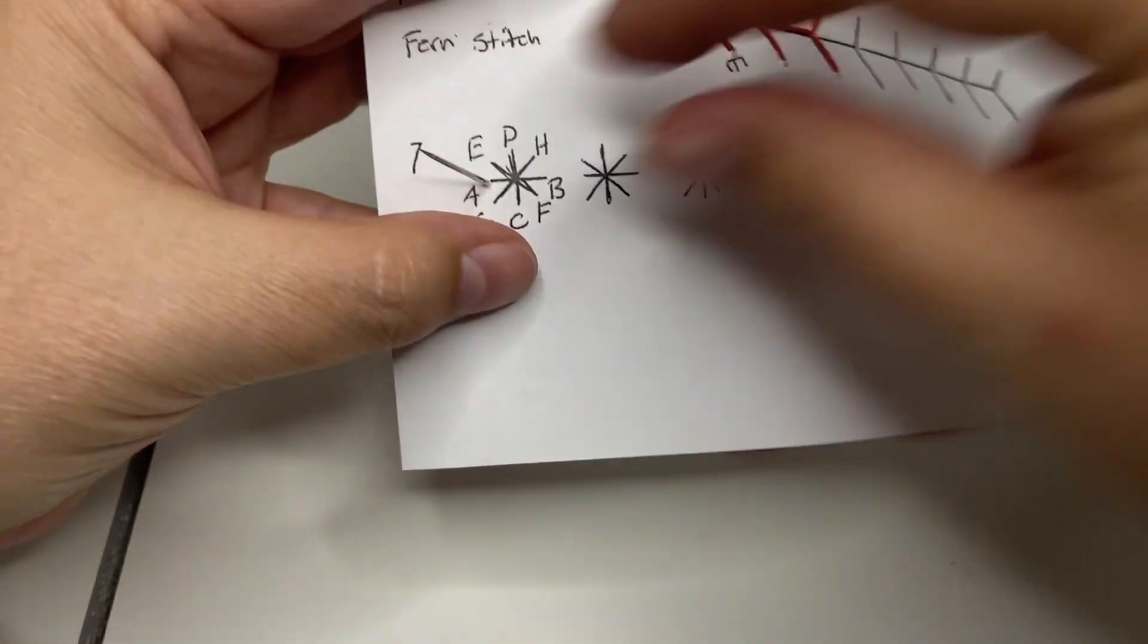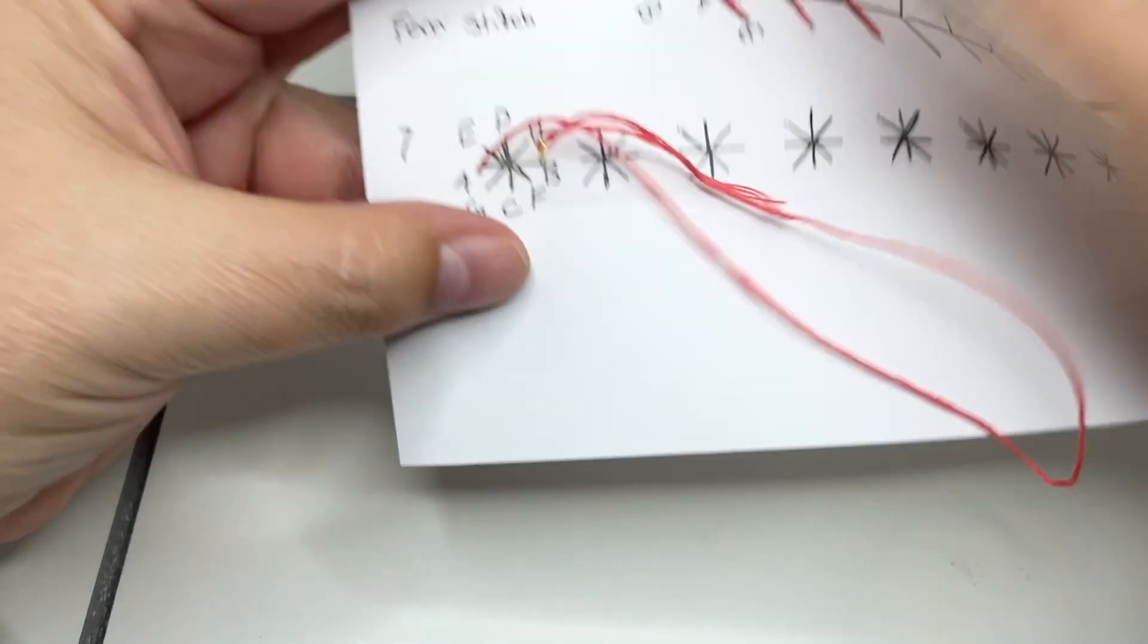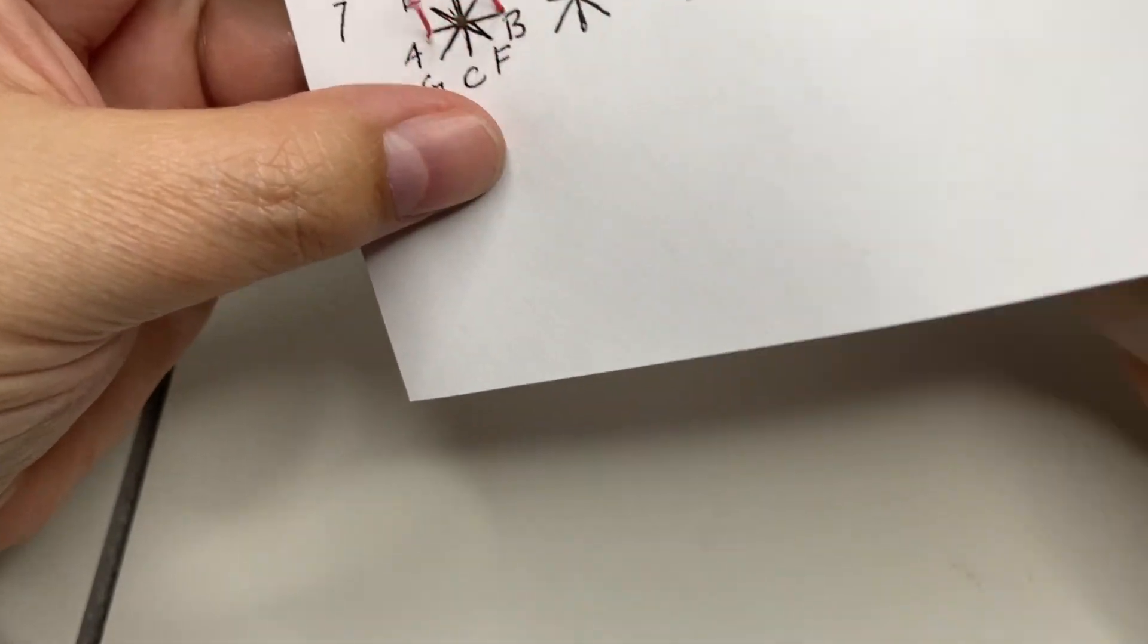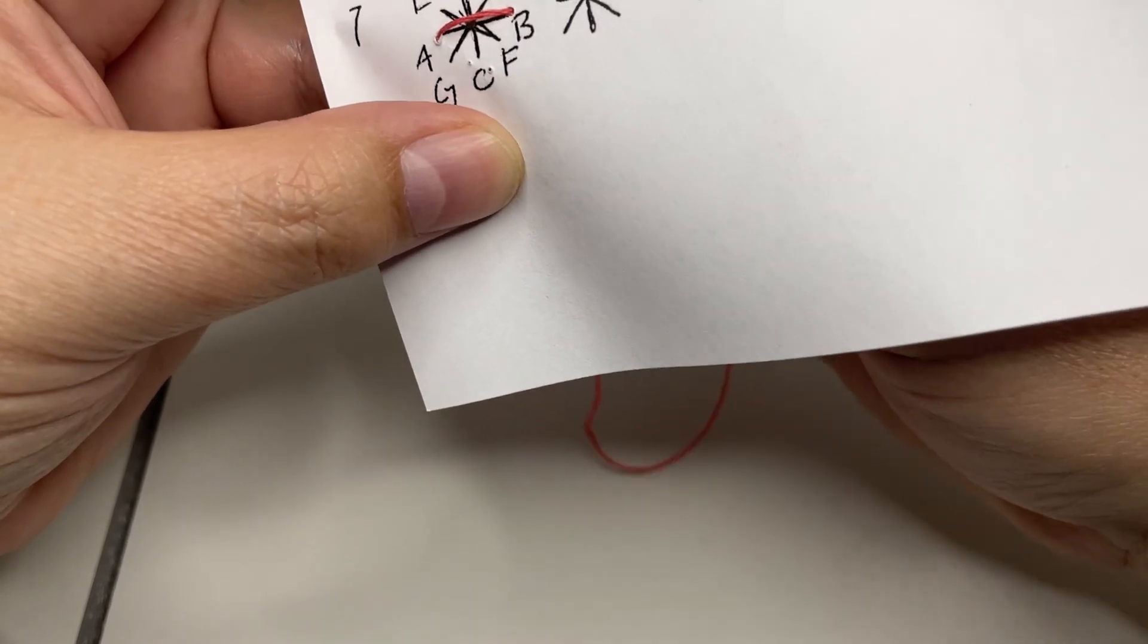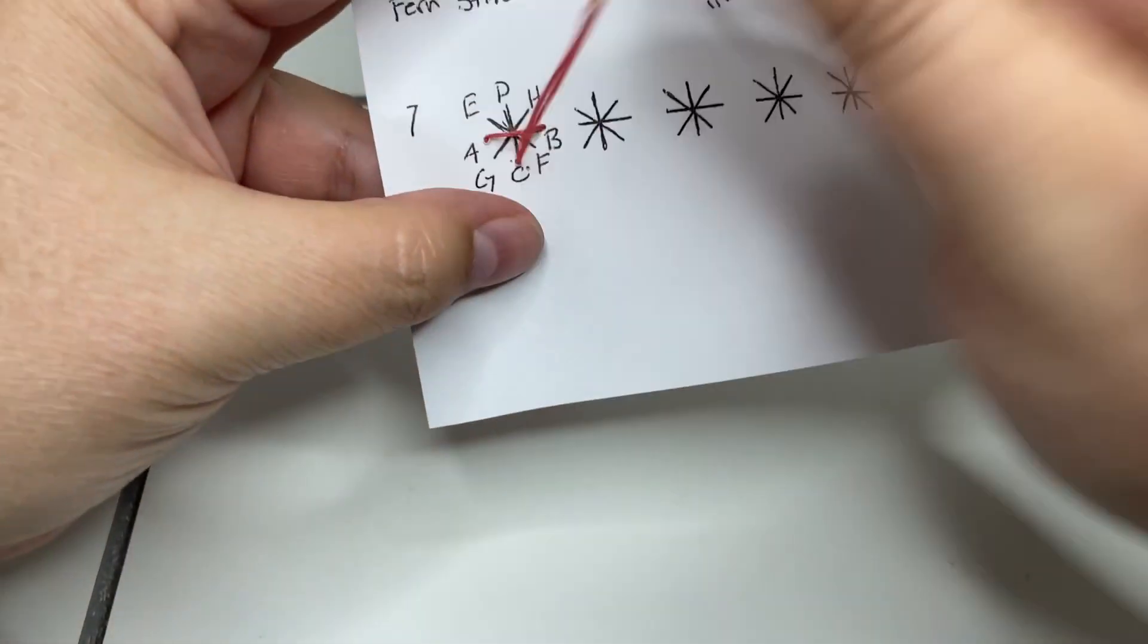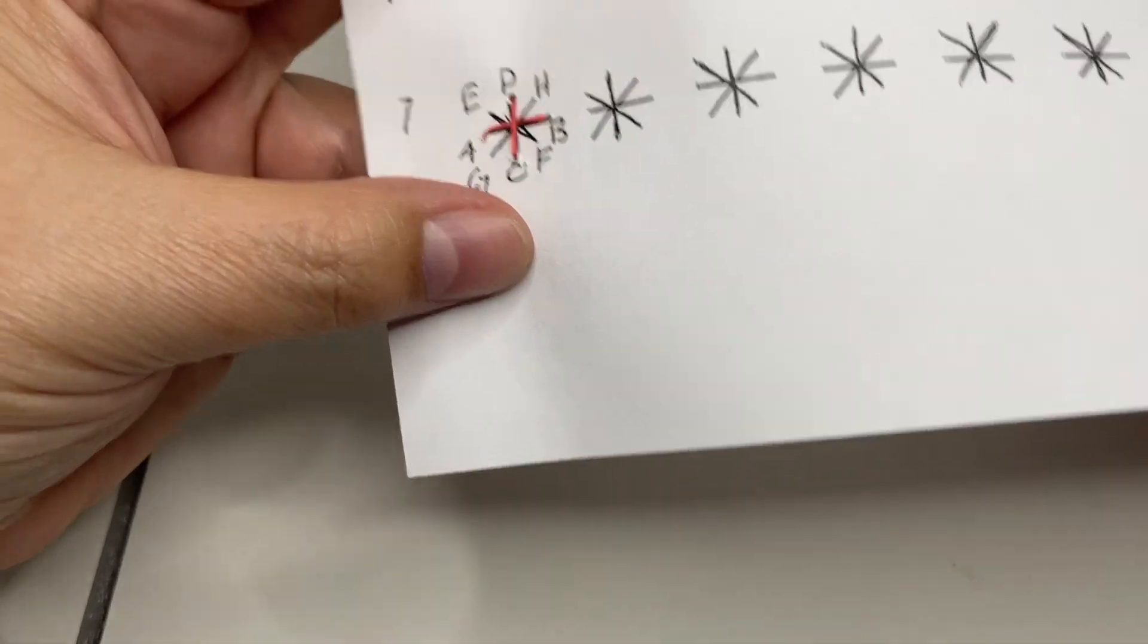Then you're going to come across to B. We're going to come down here and make a plus sign. So we're going to come down, go up through C, down through D.